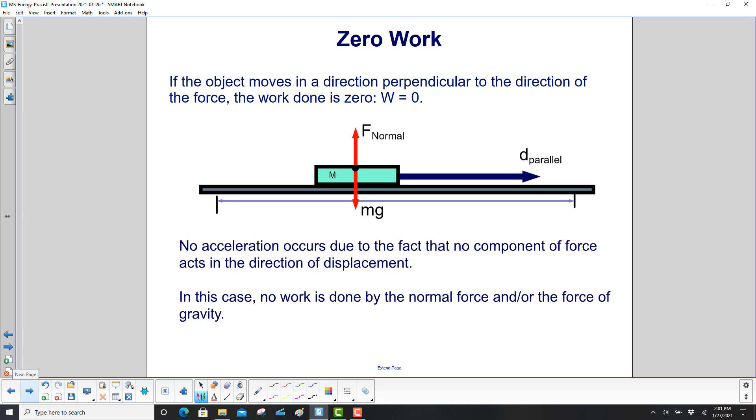If the object moves in a direction perpendicular to the direction of the force, in this case, you've got gravity pulling down on this block, and you've got a normal force from this surface pushing up. But the object is only moving horizontally here. No acceleration occurs in a vertical direction due to the fact that no component of force acts in the direction of displacement. The box here, the block, is not going up and down at all. Therefore, no work is done by either the normal force or the force of gravity.